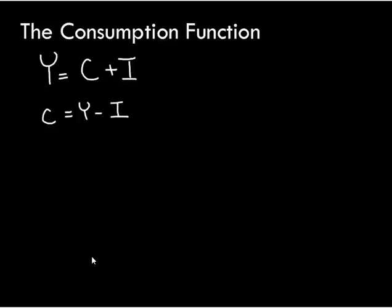If we divide this through by L and define a couple of new variables: the first variable is per worker consumption. That's written as little c, which equals big C divided by L. I'm also going to define little i, which is investment over L, or per worker investment.